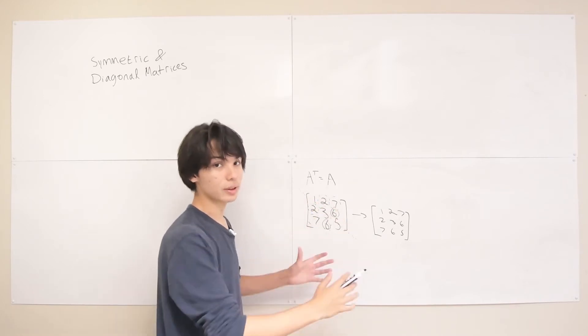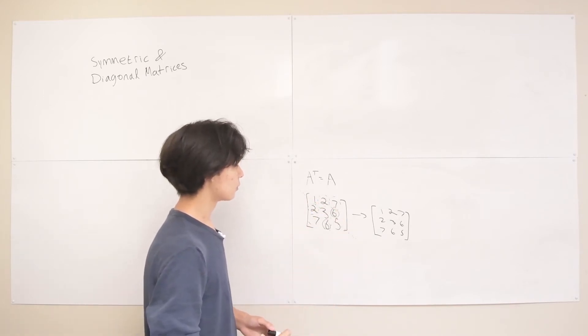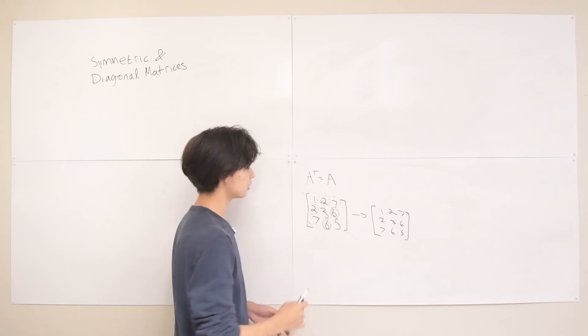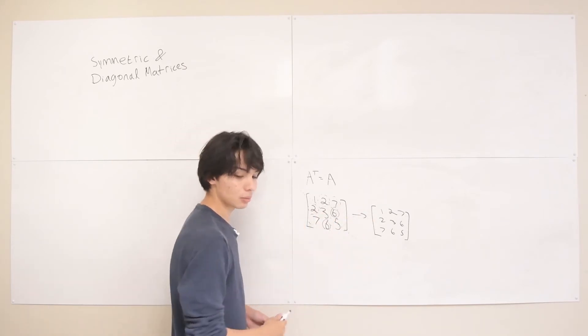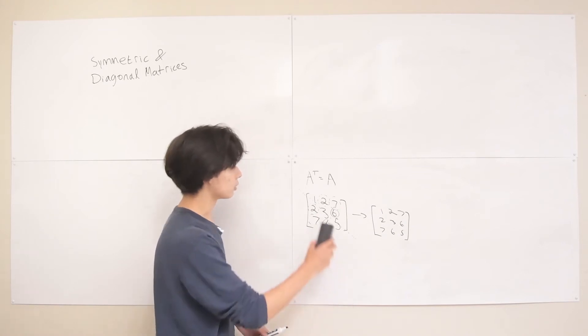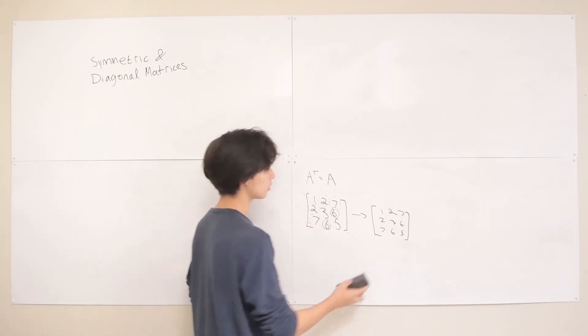These just kind of stay stationary when you transpose the matrix. So as long as these things across the diagonal are symmetric, then you have a symmetric matrix that is the same thing when you transpose it. So that's really what you're looking for, is this mirroring across the diagonal of terms.